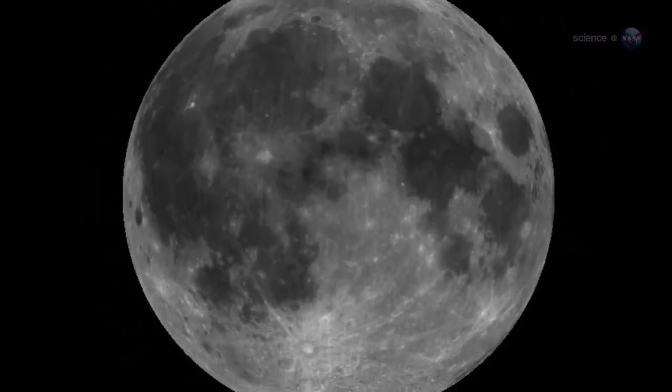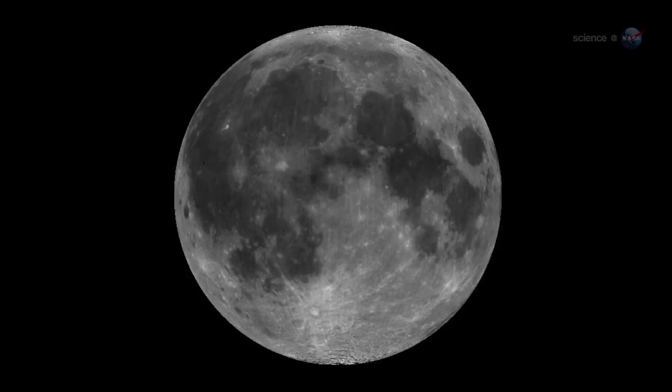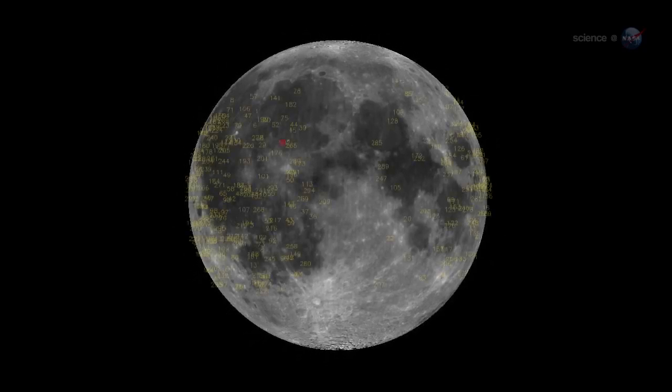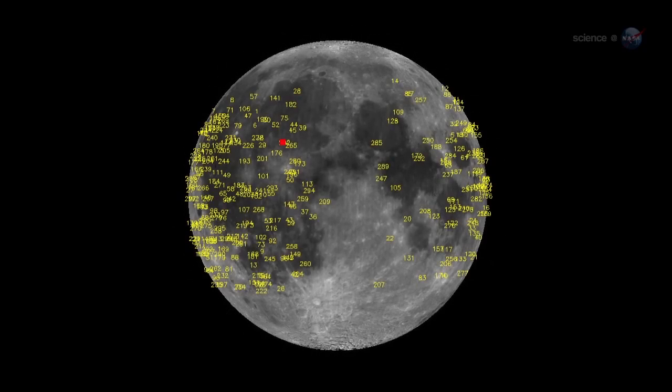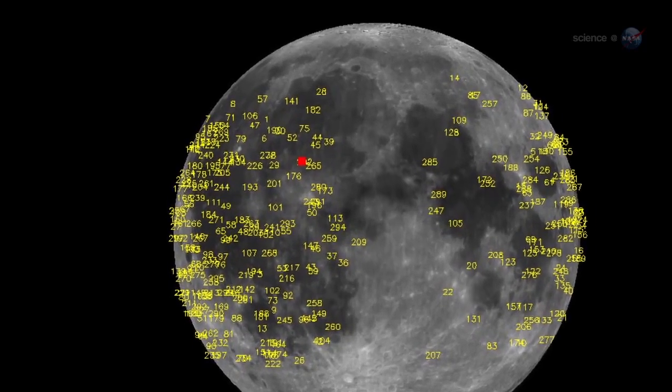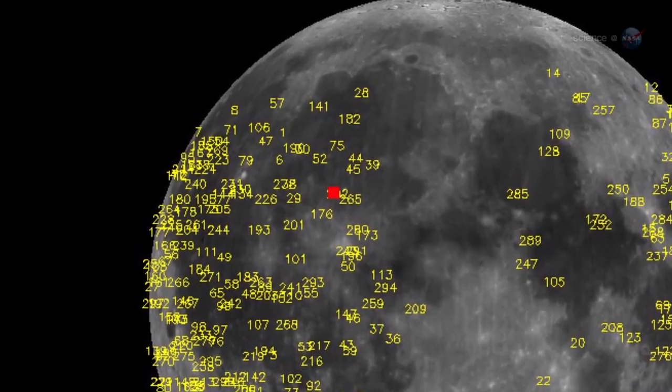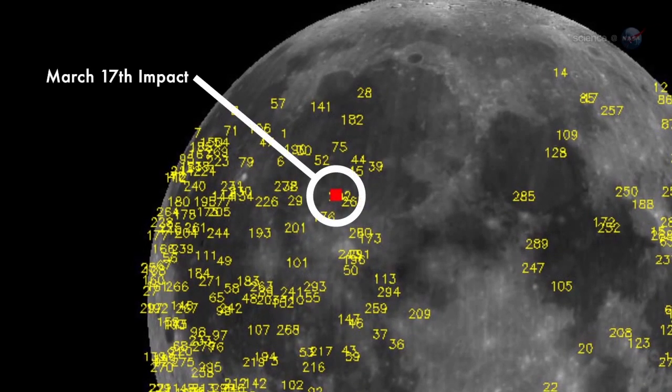Unlike Earth, which has an atmosphere to protect it, the Moon is airless and exposed. Lunar meteors crash into the ground with fair frequency. Since the monitoring program began in 2005, NASA's Lunar Impact Team has detected more than 300 strikes, most orders of magnitude fainter than the March 17th event.